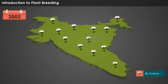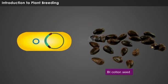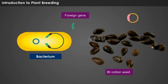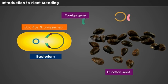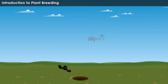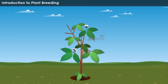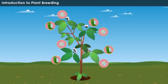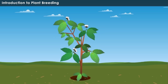India attained the status of leading producer due to the introduction of B.T. cotton variety in the year 2002. The B.T. cotton varieties contained a foreign gene obtained from the bacterium Bacillus thuringiensis, which is inserted into a normal cotton seed. The transferred bacterial gene protects the plant from bollworm, one of the main culprits affecting the cotton cultivation.